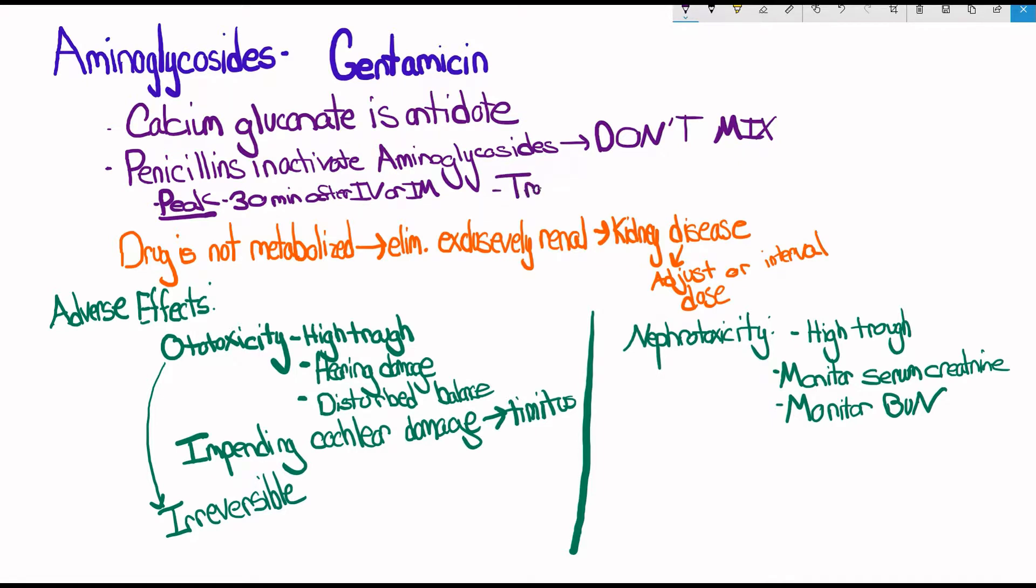A trough is when the blood concentration of the drug should be at its lowest. So this should be done right before you get your next dose. If you're just getting one daily dose of this drug a day, then it'll be one hour before the next dose is due. If you get multiple divided doses, it's just before the next dose.